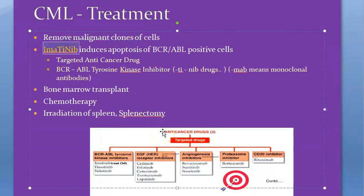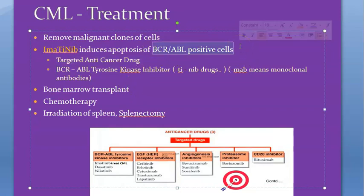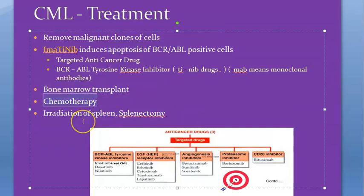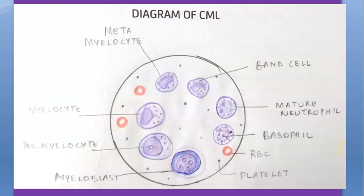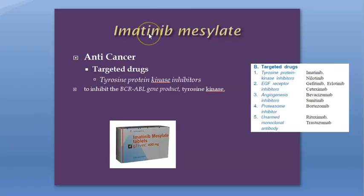The treatment with imatinib: it is going to induce apoptosis of the BCR-ABL positive cells. Since it is a targeted anti-cancer drug, it will seek out the cells which are BCR-ABL positive and kill those cells through apoptosis. You can also do bone marrow transplant, and as with all cancers, chemotherapy, irradiation, and splenectomy if required are options. That concludes our look at imatinib mesilate and chronic myeloid leukemia.